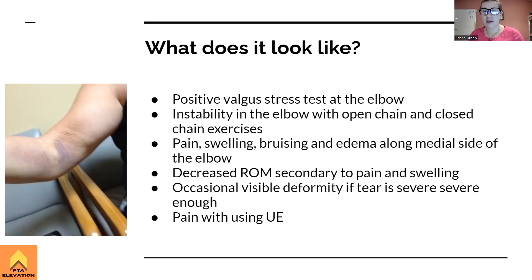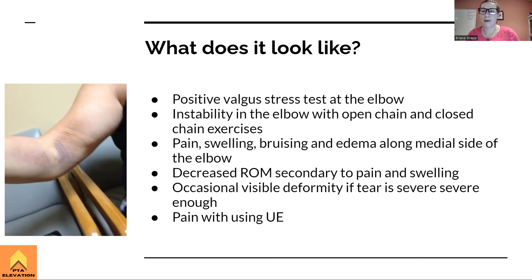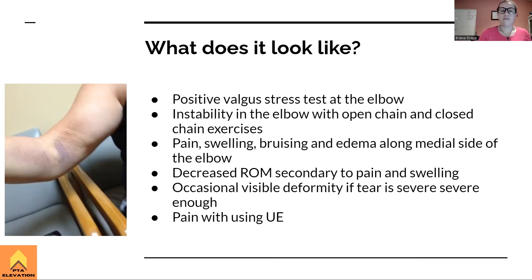You'll also see pain and tenderness along the medial epicondyle into where the UCL runs, along with general decreased range of motion due to swelling or pain. With a grade two or grade three sprain — where a lot of or all fibers are torn — you might even see a visible deformity where the elbow is popping out in a notably abnormal way. General pain and disuse of the upper extremity is common due to the instability.